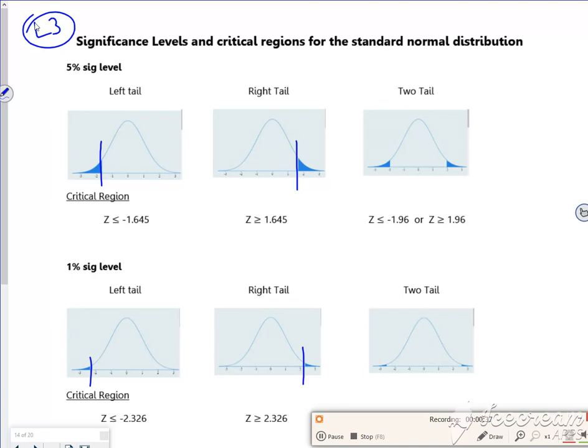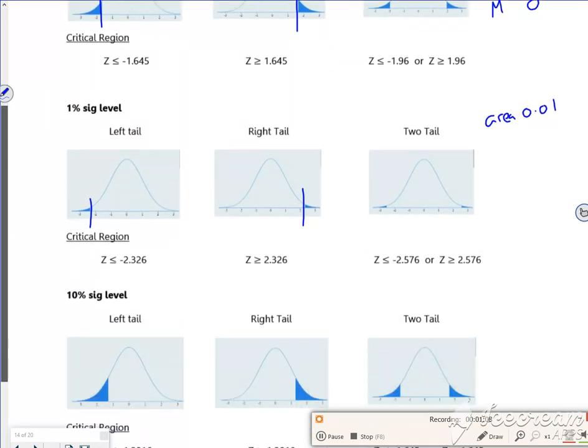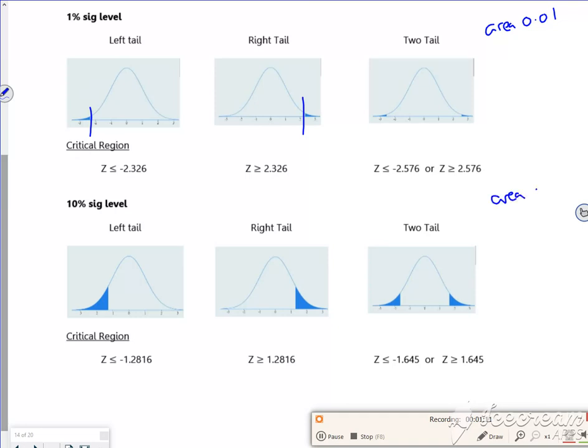So this is what I'm going to do, we're using inverse normals on this. These have been worked on, this is inverse normals with the area for this one as 0.05, with the tail left, or the tail right, or the tail central, with sigma as 1 and mu as 0. And this one down here is the same with an area of 0.01. And the 10% one's got an area of 0.1. But it's just got the Z values.